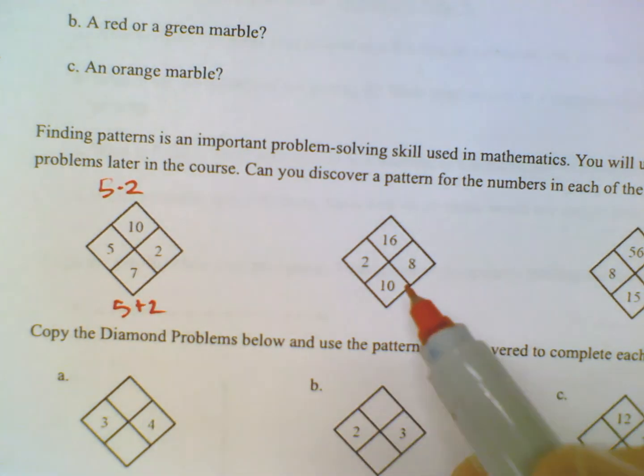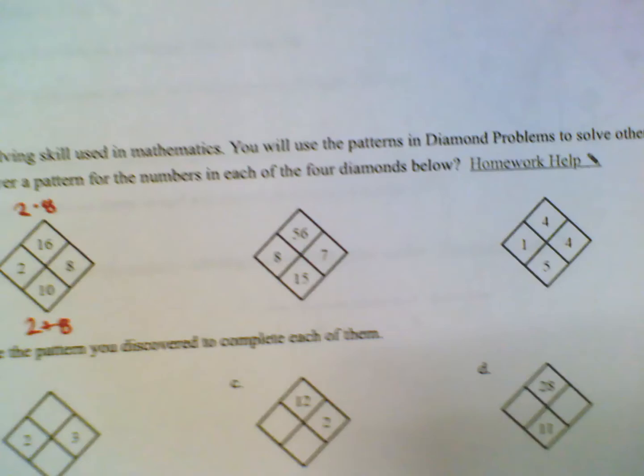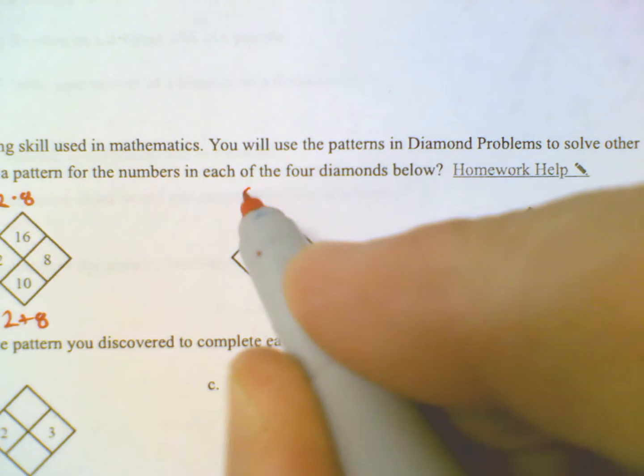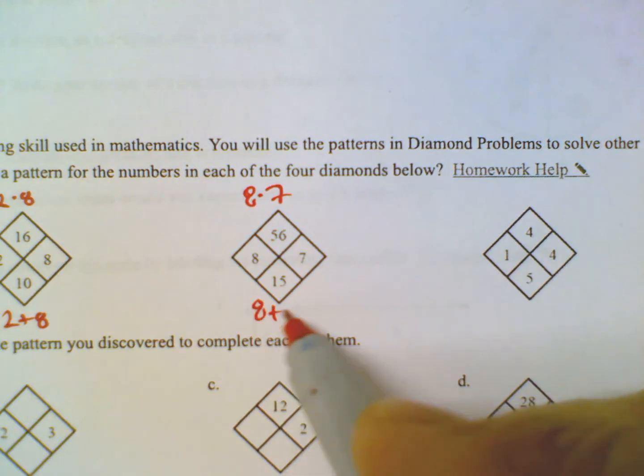So does that pattern work over here? 2 times 8. So you take those two numbers and multiply. Yep, that's 16. 2 plus 8 is 10. That works. So let's check these two. So again, 8 times 7 is 56. And then 8 plus 7 is 15.